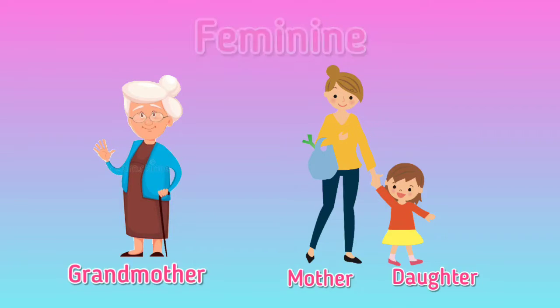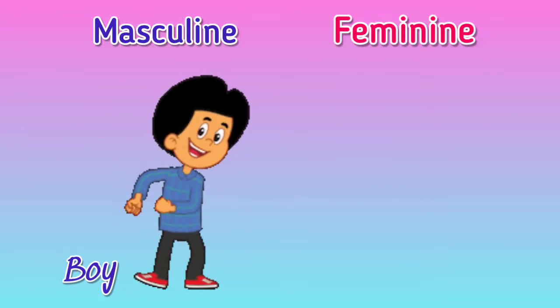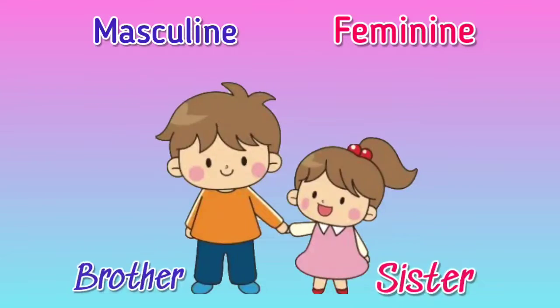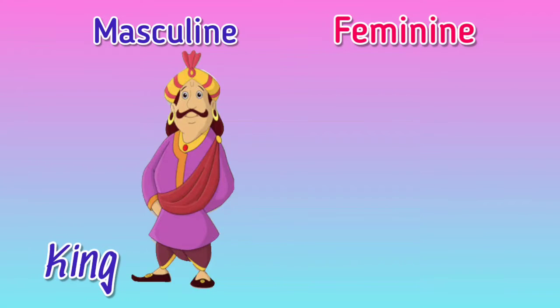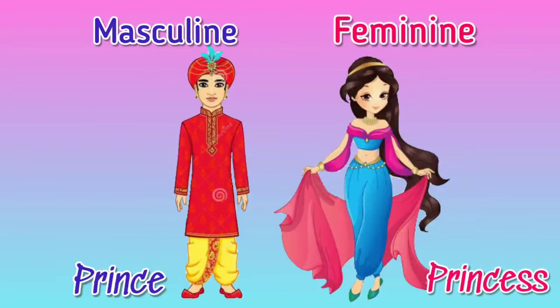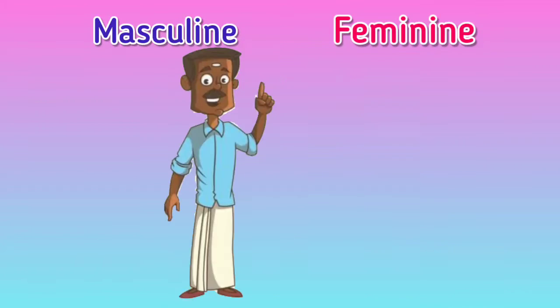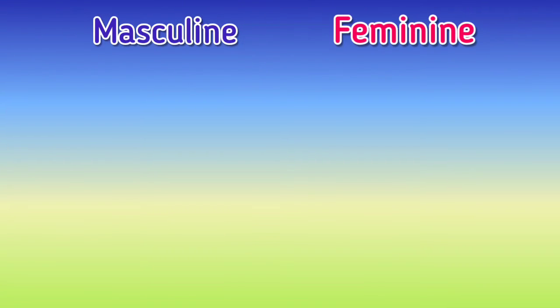Here are some more examples of pairs of masculine and feminine gender names: boy and girl, brother and sister, uncle and aunt, king and queen, prince and princess, groom and bride, husband and wife. Animals too have gender names.